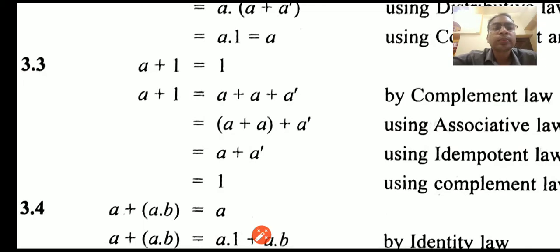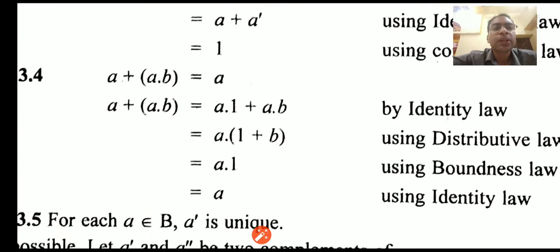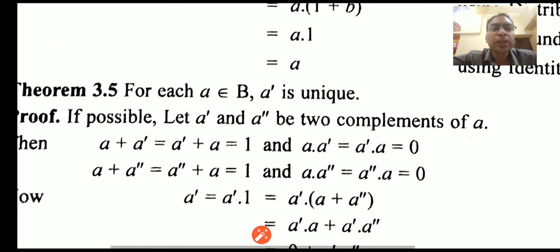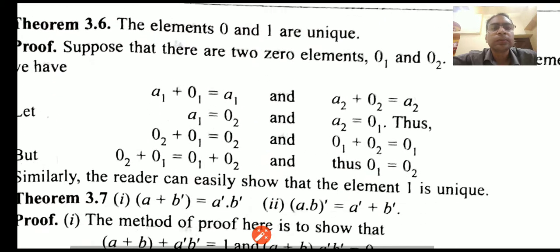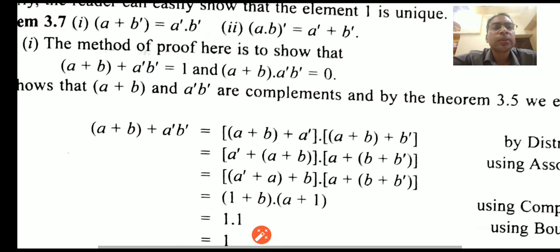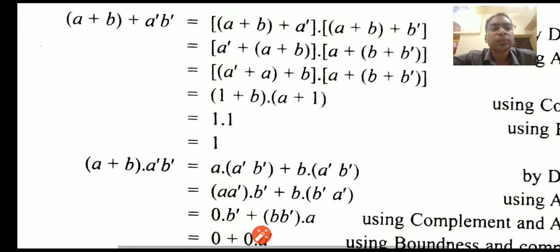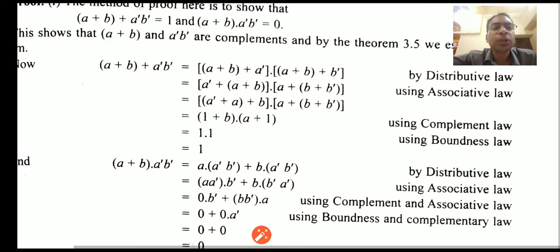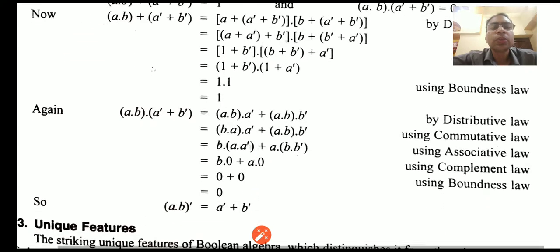Similarly, we can prove a plus 1. You can pause the video and see the proving and perform it in your copies. Next is the absorption law: a plus (a dot b) is equal to a. We have all the proofs and you can refer to the theory notes. The proof of De Morgan's theorem is also shown — you can pause the video to see the proving, and for any confusion you can comment and ask.